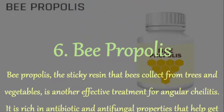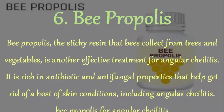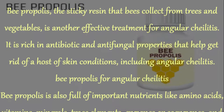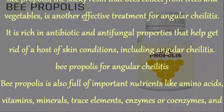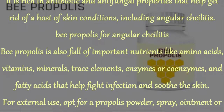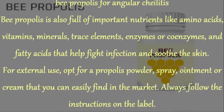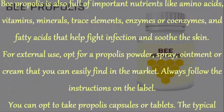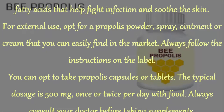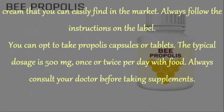6. Bee Propolis. Bee Propolis, the sticky resin that bees collect from trees and vegetables, is another effective treatment for angular cheilitis. It is rich in antibiotic and antifungal properties that help get rid of a host of skin conditions. It is also full of important nutrients like amino acids, vitamins, minerals, trace elements, enzymes or coenzymes, and fatty acids that help fight infection and soothe the skin. For external use, opt for a propolis powder, spray, ointment, or cream. Always follow the instructions on the label. You can also take propolis capsules or tablets — the typical dosage is 500 mg once or twice per day with food. Always consult your doctor before taking supplements.